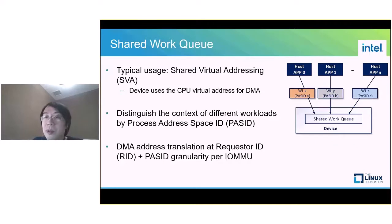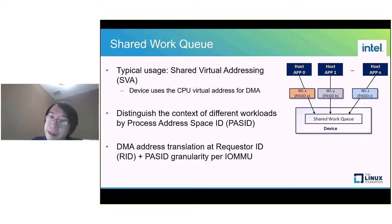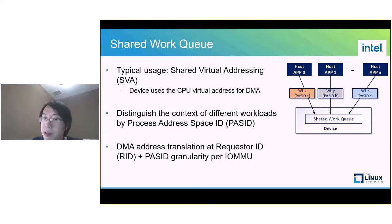Let's see how a shared work queue-based device looks like here. This shared work queue is used by multiple users in the host, and the typical usage of a shared work queue is to support shared virtual addressing, SVA. SVA allows the device to use the CPU virtual address for DMA operation. The device also can use the PASID, process address space ID, to distinguish the context of different workloads. The DMA address translation will be performed by IOMMU at a request ID plus PASID ID granularity.